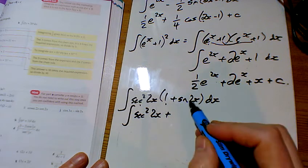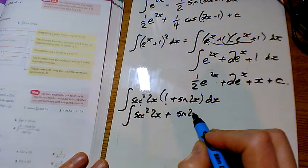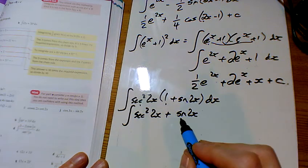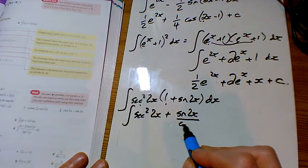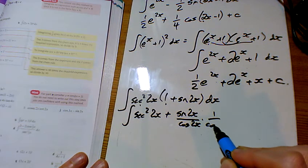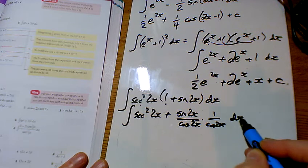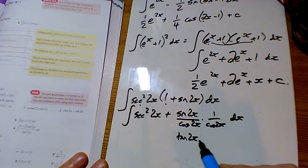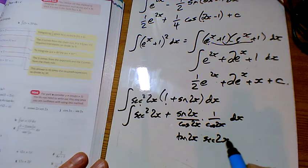And then this one here, we've got sine 2x. And rather than writing sec, I'm going to write a cos on the bottom twice. And that can help us see that this one here is a tan 2x sec 2x.